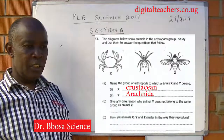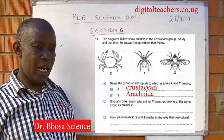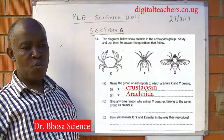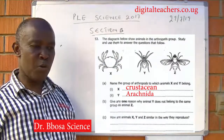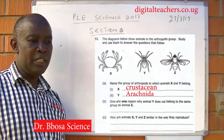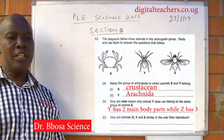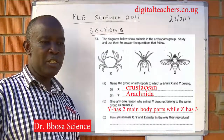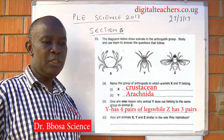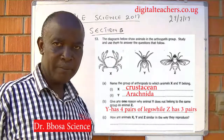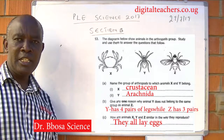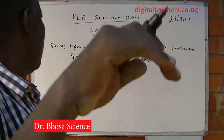The diagram below shows animals in the arthropod group. Study and use them to answer the questions that follow. Name the group of arthropods to which Y belongs — Y belongs to the group called arachnida. Give one reason why animal Y does not belong to the same group as animal Z: animal Y has four pairs of legs, while animal Z has three pairs of legs. How are animals X, Y, and Z similar in the way they reproduce? They all lay eggs.